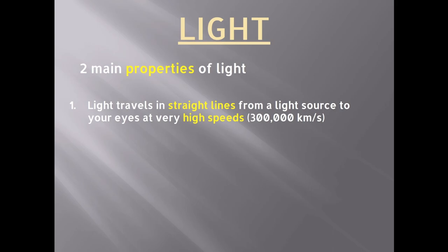So you have these two main properties: light travels in straight lines — always the case — and light travels at very high speed: 300,000 kilometers per second. That's about seven times around the world in a second — very fast. Whereas sound travels at about 300 meters per second, so light is about a million times faster than sound.